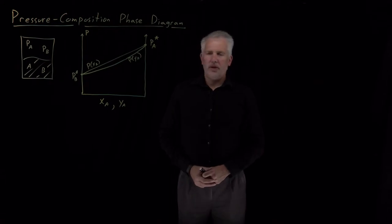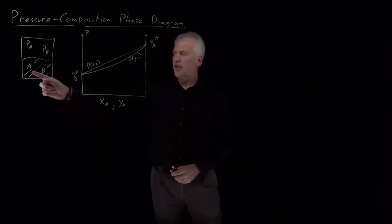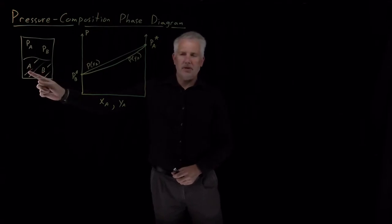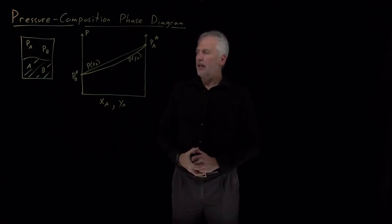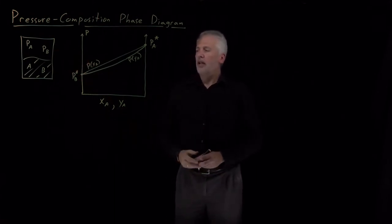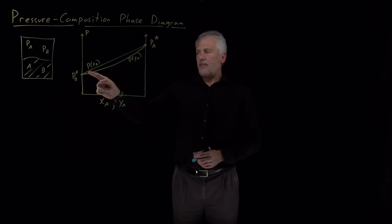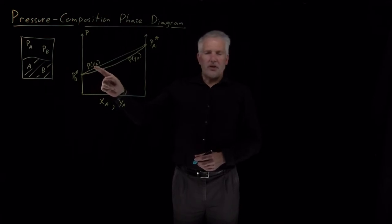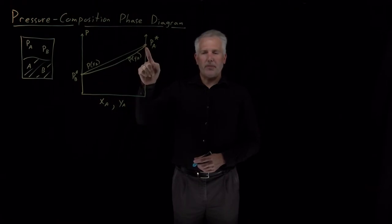Here's what we understand so far about binary ideal solutions: a mixture of two different substances, A and B, in a liquid phase, with their vapor in equilibrium in the vapor phase. Raoult's law tells us the pressure as a function of the mole fraction in the liquid phase is a straight line connecting the vapor pressure of B to the vapor pressure of A.